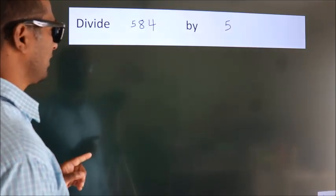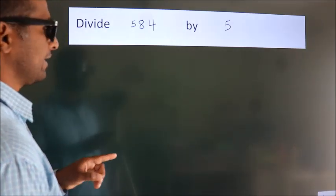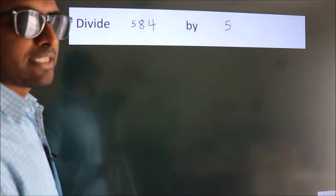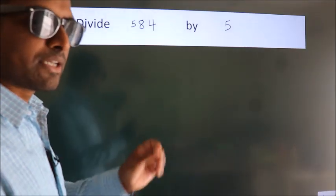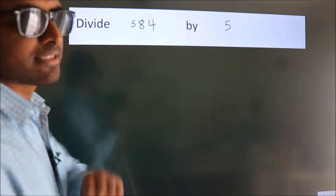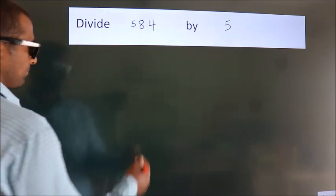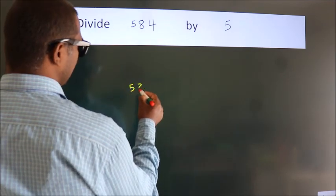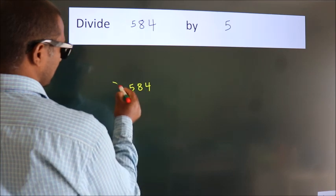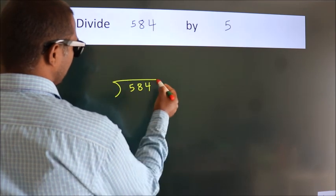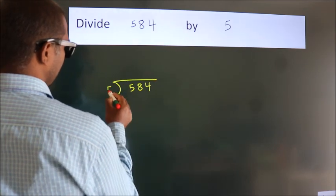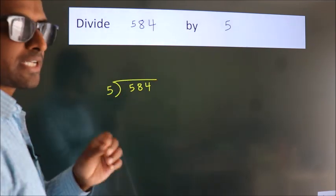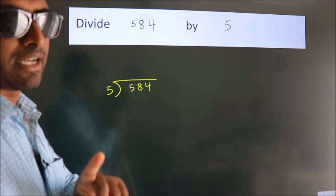Divide 584 by 5. To do this division, we should frame it in this way: 584 here, 5 here. This is your step 1.